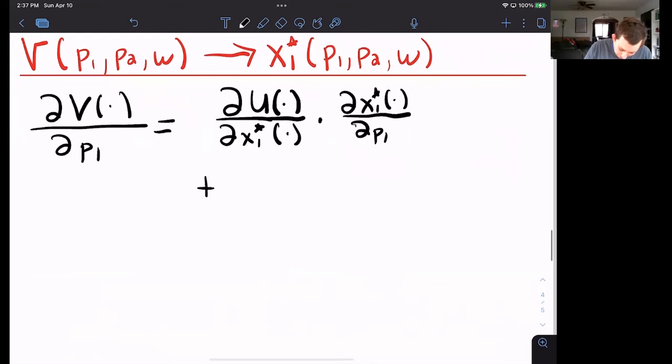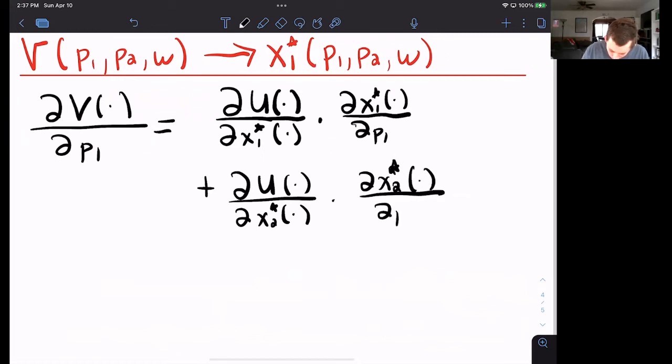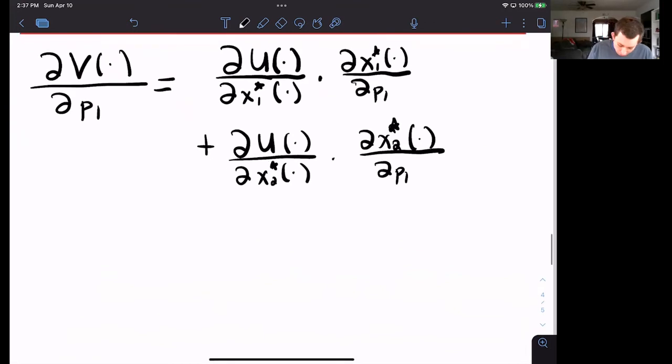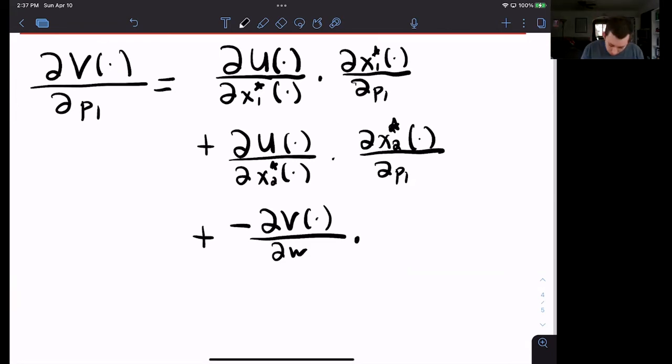It also depends how our utility changes with respect to our Marshallian demand for good two, which is then affected by how our Marshallian demand for good two changes with respect to p1. There's also a wealth effect happening here. So what is the wealth effect of a change in price one? Well, wealth effects go the other way, because the price goes up, my wealth, I feel poorer. So this is a minus. This is dv with respect to wealth. And then that total wealth effect depends on how much I'm buying of good one. So that is x1 star of dot.